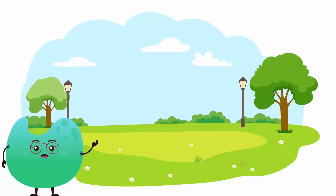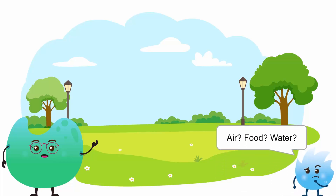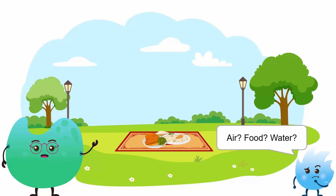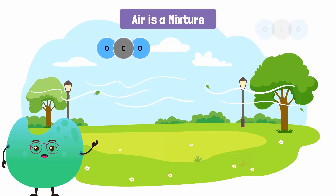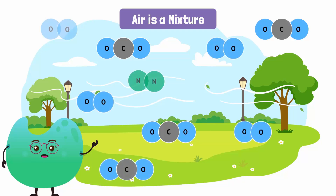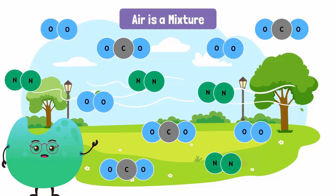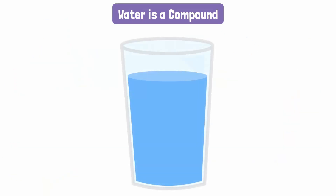What are some of the things that we as human beings cannot live without? Food, water, and air. We can live without food for only a few weeks, without water for only a few days, but we cannot live without air for more than a few minutes. Air, which is essential for our survival, is a mixture of different gases such as carbon dioxide, oxygen, and nitrogen.